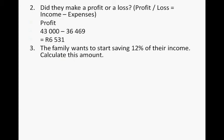The family wants to start saving 12% of their income during the month — calculate this amount. So 43,000 times 12% is 5,160 Rand. Remember, the way you calculate 12% is: 43,000 times 12, divided by 100.